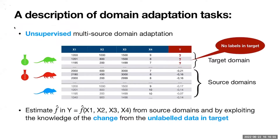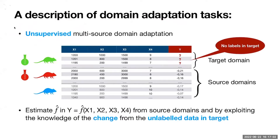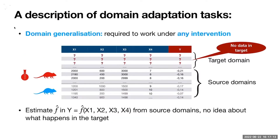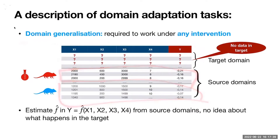This talk focuses on unsupervised multi-source domain adaptation — using source data plus unlabeled target data to make robust predictions. There's also domain generalization, where we have no data in the target domain at all, and we try to use source data to transfer to an unknown domain. I assume an underlying causal system, and that there's no intervention on Y, otherwise the problem is ill-posed.